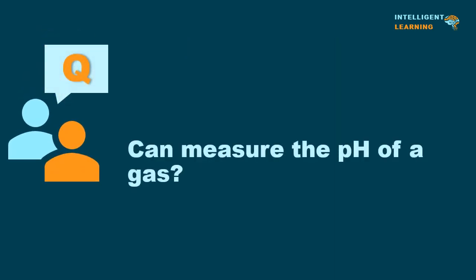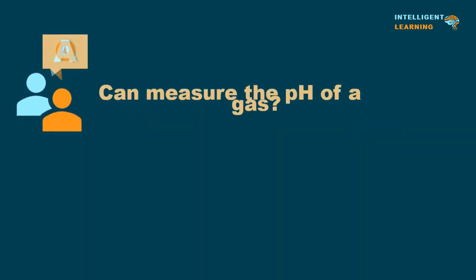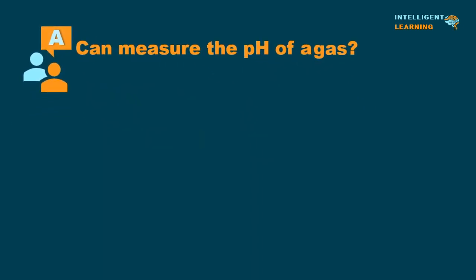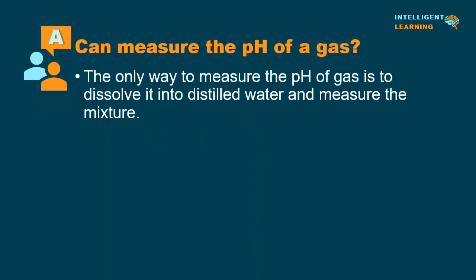Can you measure the pH of a gas? The only way to measure the pH of a gas is to dissolve it into distilled water and measure the mixture.